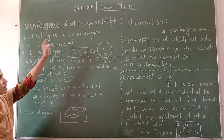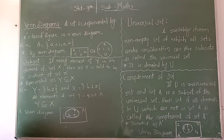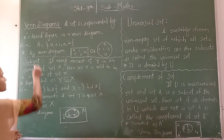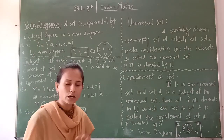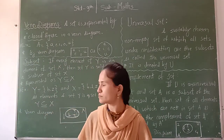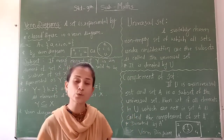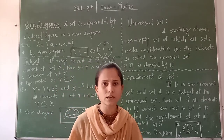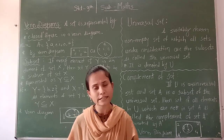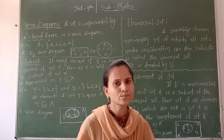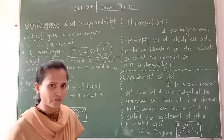Venn diagrams: a set is represented by a closed figure in a Venn diagram. Always remember, if you are representing any set by a Venn diagram, you have to use a closed figure. The closed figure can be a rectangle, it can be a circle, it can be a triangle.